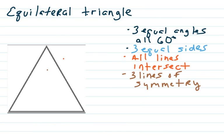Now an equilateral triangle. Three equal angles, all 60 degrees. All the sides are equal. All the lines intersect and they will have three lines of symmetry.